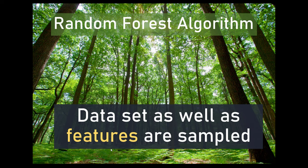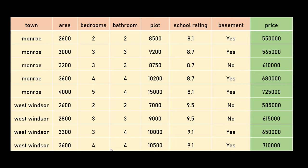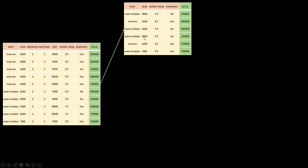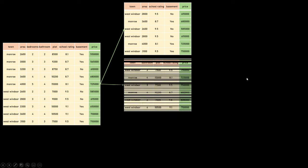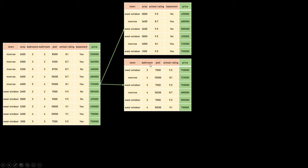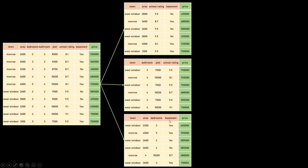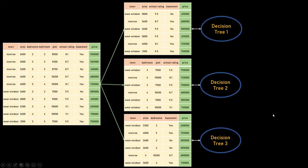So basically you sample your rows as well as your columns. In our classical housing price prediction example, features like town, area, bedrooms etc. are your input and pricing is the target variable. Here you sample rows and columns both — for example, one subset might not have the bedroom or plot column, another might not have bedrooms, a third might not have school rating. You randomly pick rows and columns, then on each individual dataset you train a decision tree model and aggregate the results.